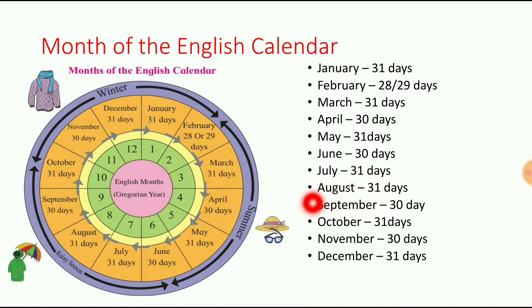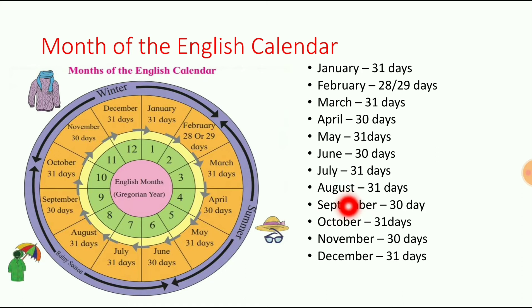The eighth month is August. A-U-G-U-S-T, August. August has 31 days.